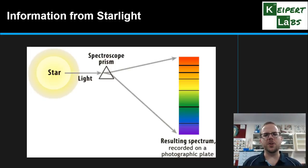So let's think about what information we get from starlight. We can find out about its temperature, how hot the star is burning, its composition, what elements it's made of, and also how fast it's moving through the universe. We're going to go through each of these in turn.